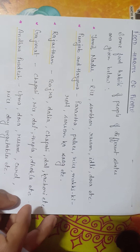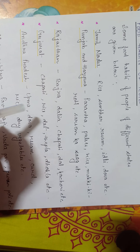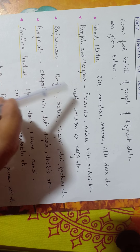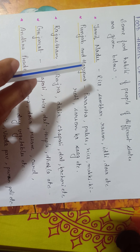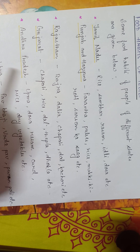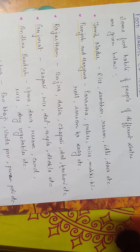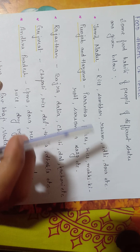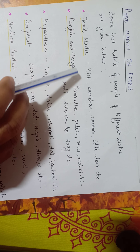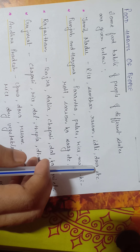Now, food habits of people. Some food habits of people of different states are given below. Different food habits of people of different states are mentioned here. Food habits of people are affected by the food production and supply of food at that particular place. In Tamil Nadu, people prefer to eat rice, sambar, rasam, idli, and dosa.